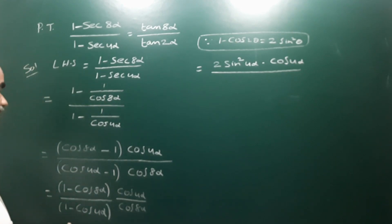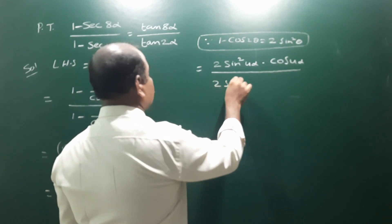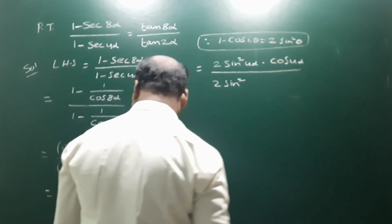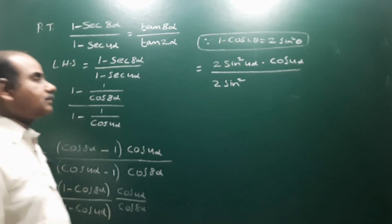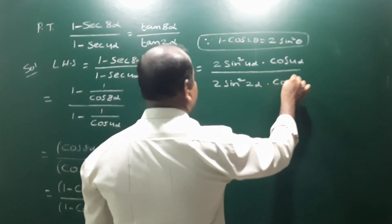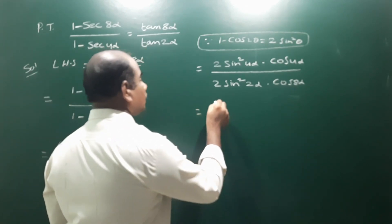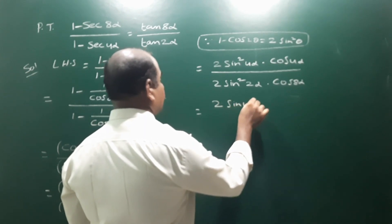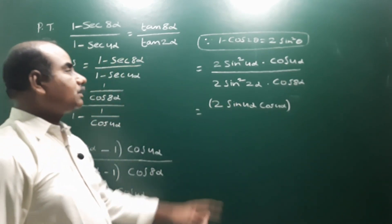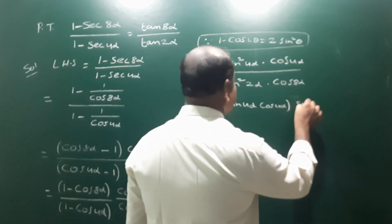For the denominator, applying the same formula again: 1 - cos4α = 2sin²2α, since half of 4α is 2α. So the expression becomes 2sin²4α · cos4α divided by 2sin²2α · cos8α. We can write 2sin4α · cos4α in the numerator.